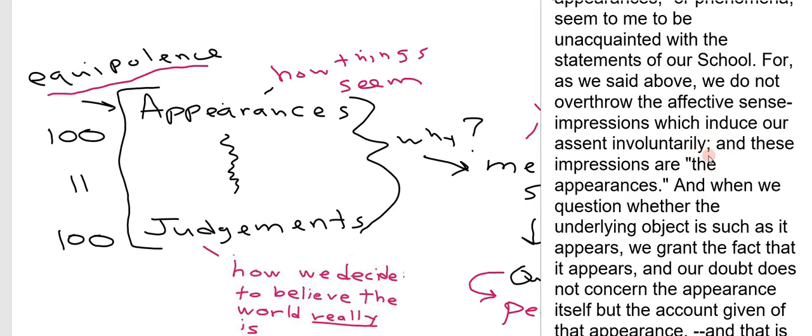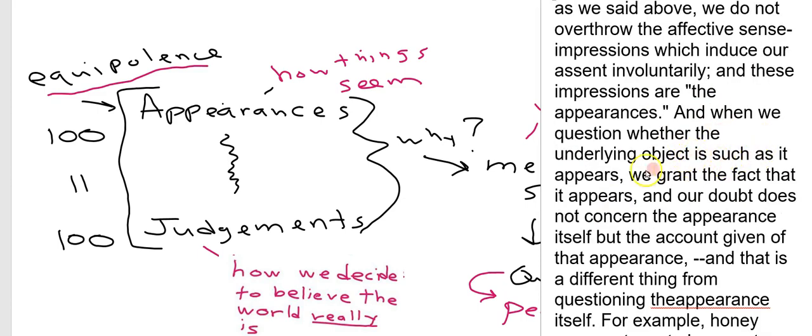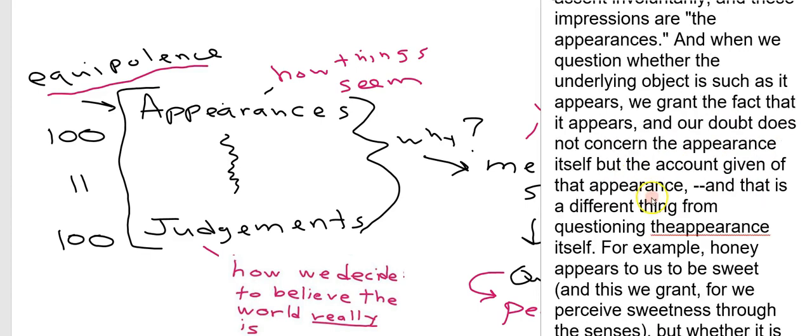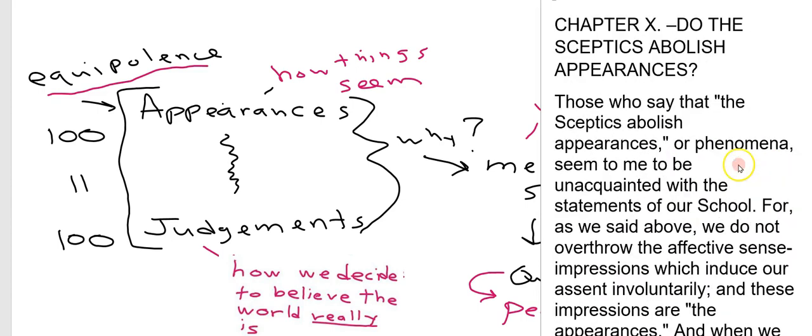The sky looks blue, and that's just a fact. It looks blue to us. And these impressions are the appearances. And when we question whether the underlying object is such as it appears, we grant the fact that it appears. And our doubt does not concern the appearance itself, but the account given of that appearance. And that is a different thing from questioning the appearance.